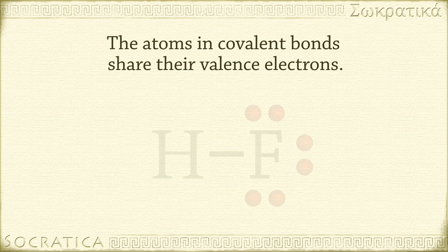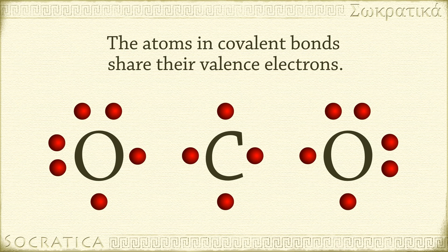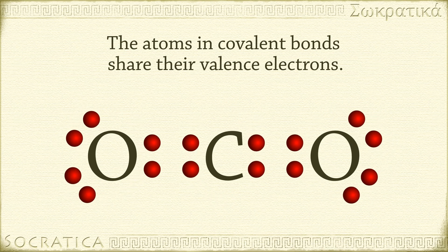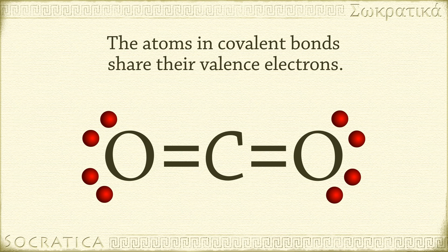Sometimes two atoms share more than two electrons, in the case of a double or triple covalent bond. We can see an example of that in carbon dioxide, CO2. The Lewis dot structure looks like this. Carbon has four valence electrons and oxygen has six valence electrons. Carbon needs four more electrons to achieve noble gas configuration, and oxygen needs two more. This can be achieved if the carbon atom forms two double bonds with each oxygen atom. We can replace the two shared pairs of electrons in the diagram with two straight lines, representing a double bond.